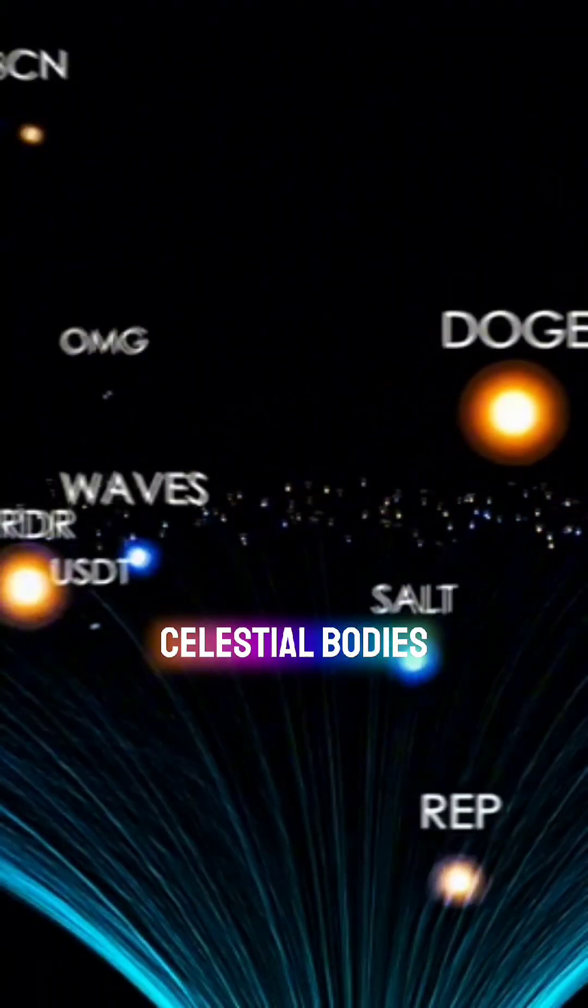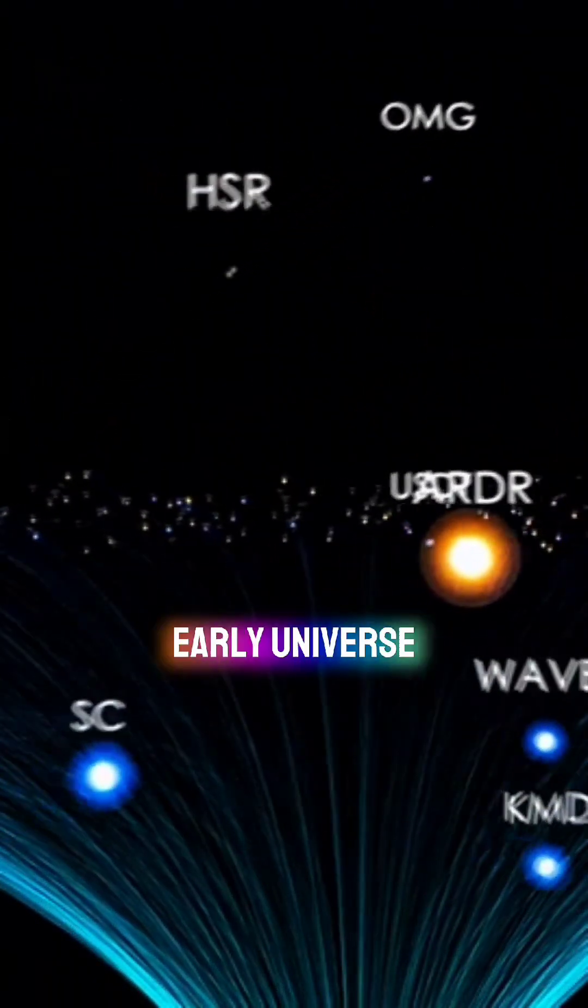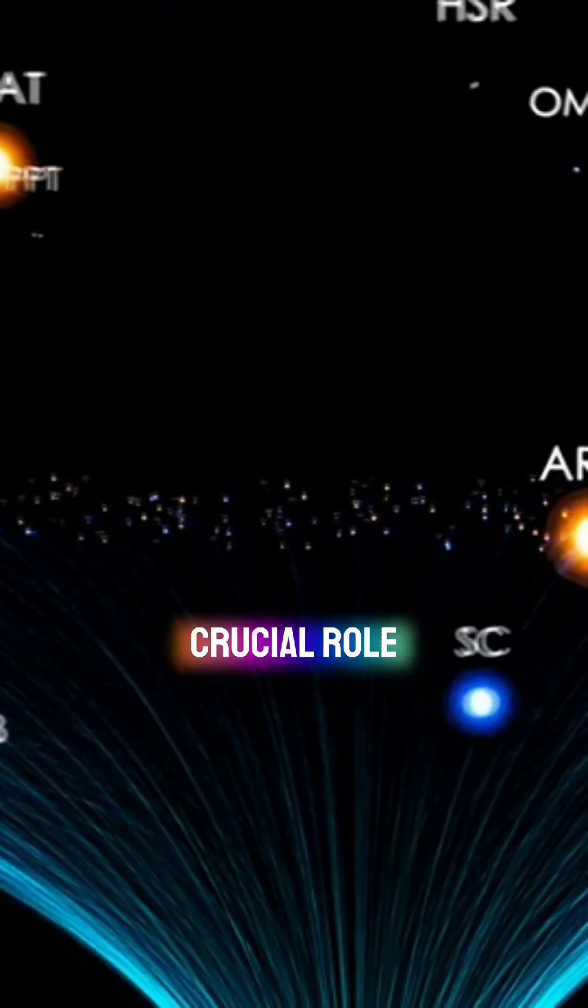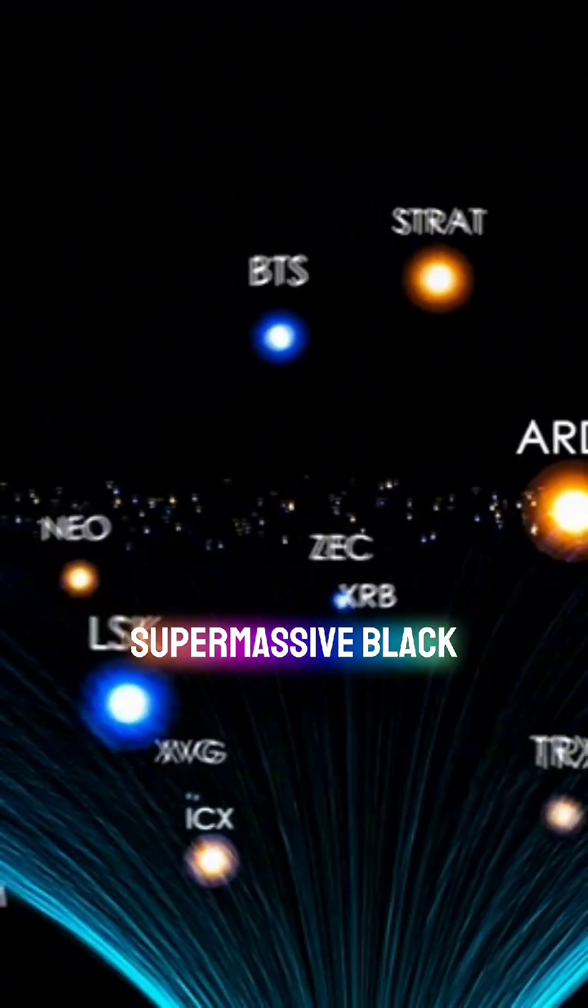These hypothetical celestial bodies are believed to have been present in the early universe, playing a crucial role in the formation of supermassive black holes.